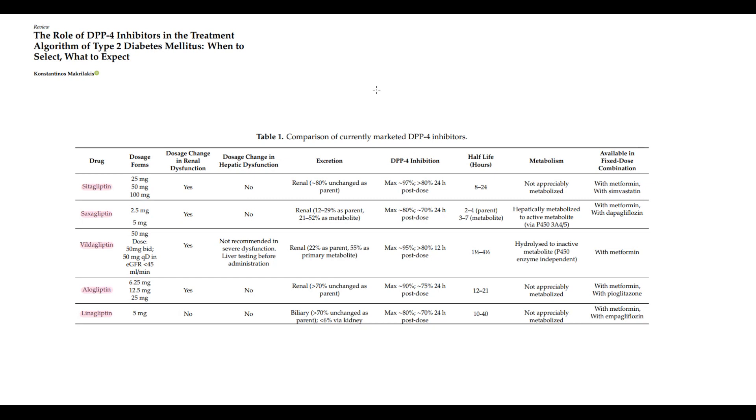So DPP-4 inhibitors are safe glucose-lowering agents, but they are not as potent as SGLT2 inhibitors or GLP-1 receptor agonists. And because of this, we use DPP-4 inhibitors in combination with other, more potent agents.